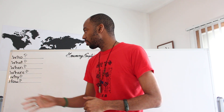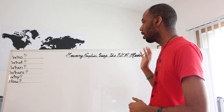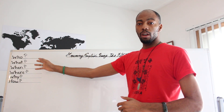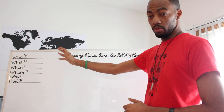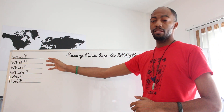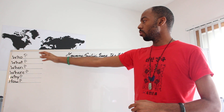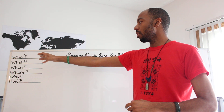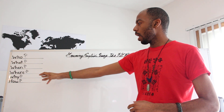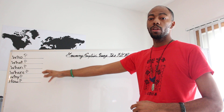As you can see on the board, when I do the second lesson — the official lesson after the introduction — we will start talking about the who, what, when, where, why, and how. These are called interrogatives.